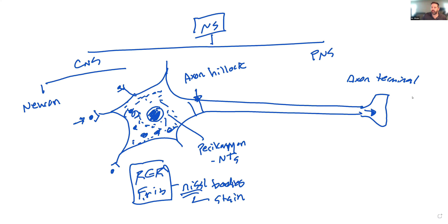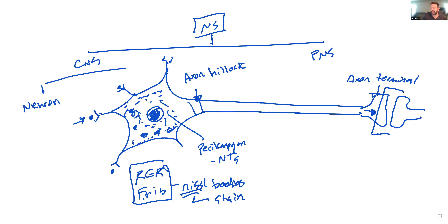At the axon terminal, a signal can be sent to a dendrite of another neuron, or to something like a muscle — the motor end plate — or another effector organ. This location at the axon terminal is where we find what's called a synapse, which we'll discuss in more detail later.